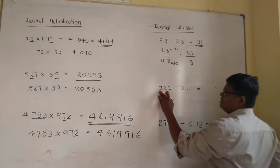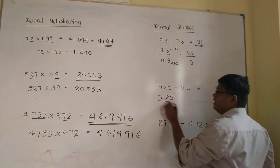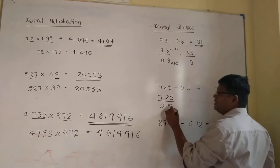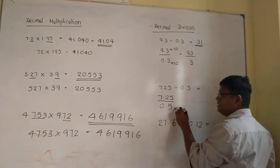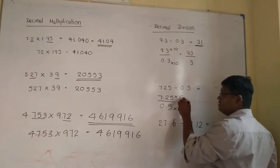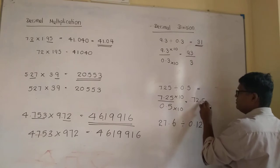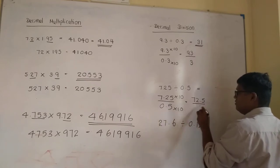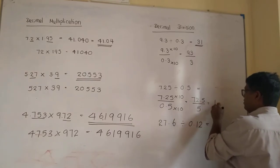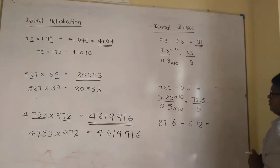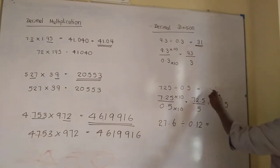Here, 7.25 divided by 0.5. One decimal place, multiply by 10. Then it is 72.5 divided by 5. 5 times 1 is 5. 5 times 4 is 20. Again 2.5. The answer is 14.5.